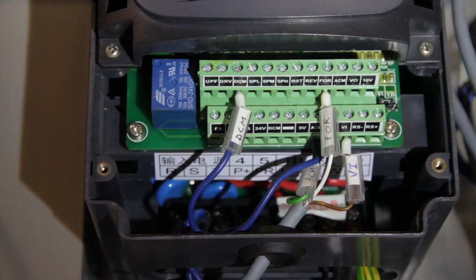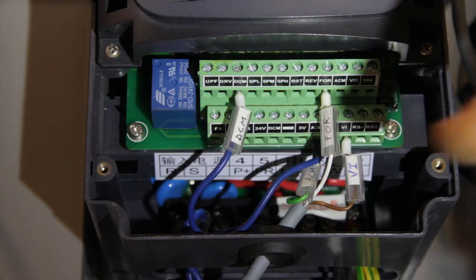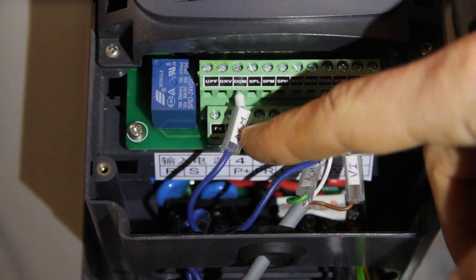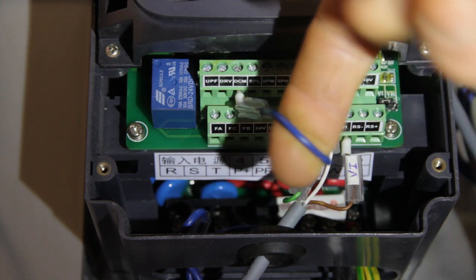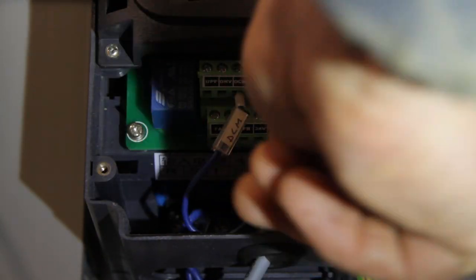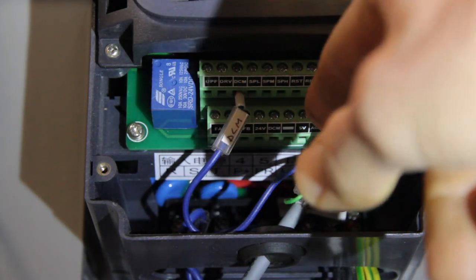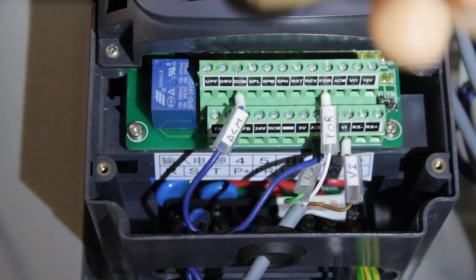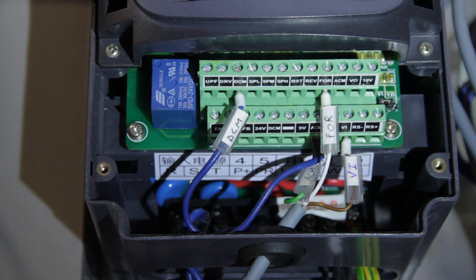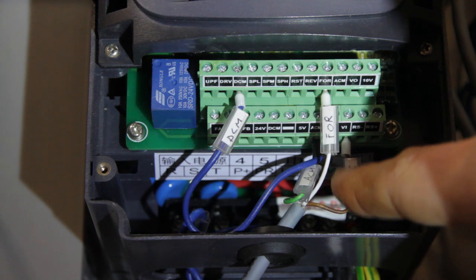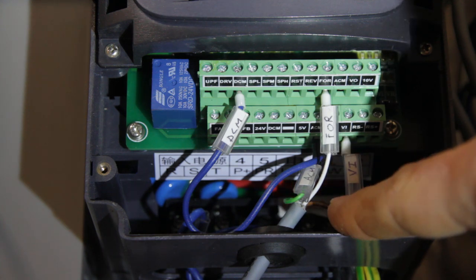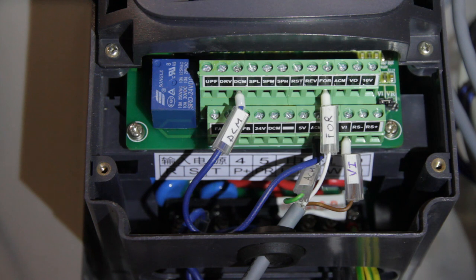The connections for the controls for the VFD are pretty straightforward. There is a digital common which needs to be connected to the analog common, so you can see this is connected. And then there is a forward signal which is connected to the forward, which is used to turn on the VFD. And then there is a voltage in which is analog input, which comes from the analog output to control the speed of the VFD.